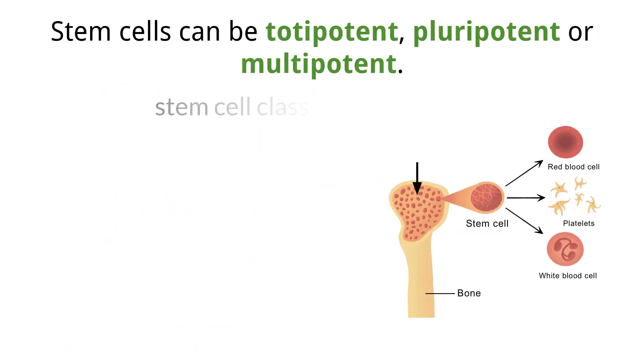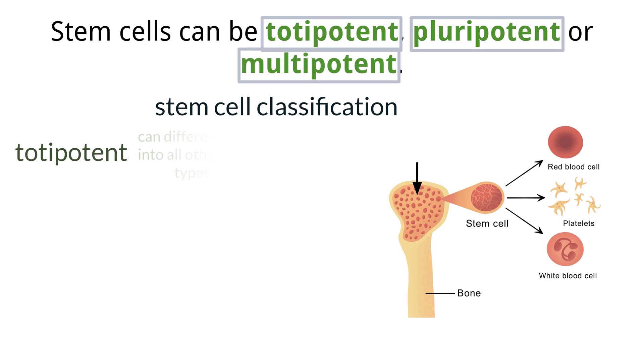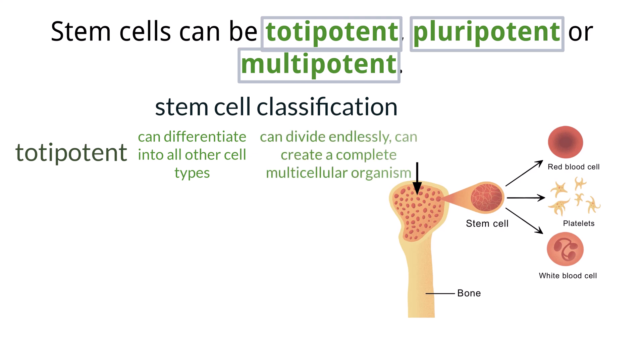Stem cells can be classified into different categories based on their ability to differentiate down different pathways. These classifications are called totipotent, pluripotent, and multipotent. Totipotent stem cells have the ability to differentiate down any pathway, meaning they can turn into any type of cell. This is the least restrictive classification, and we find these totipotent stem cells within early developing embryos that need the ability to create all cell types. It is only in this totipotent form that they can continuously divide, and it is the only form able to create an entire organism based on having every pathway available.